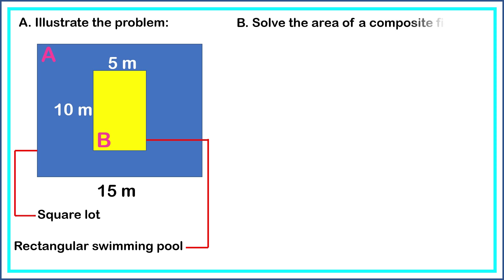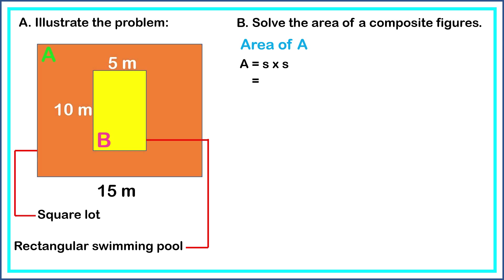To find the area of the remaining lot, we first get the area of Figure A and the area of Figure B. Figure A is in the shape of a square. The formula for the area of a square is: Area equals side times side. The side is 15 meters, so 15 meters times 15 meters equals 225 square meters. This is the area of the square.